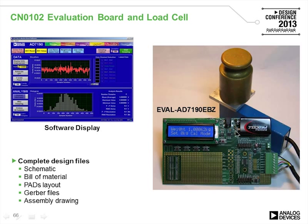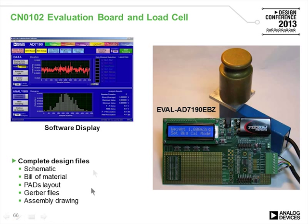The hardware includes the battery mounted on the board to minimize noise effects, plus the load cell connection and software display. The display shows peak-to-peak noise values, individual noise samples, and a histogram distribution of noise. Complete design files include schematic, bill of materials, PCB layout, Gerber files, and assembly drawings.